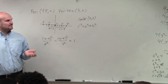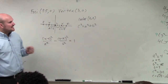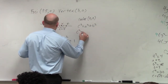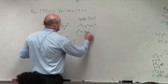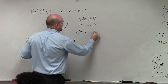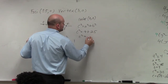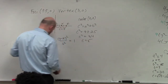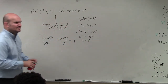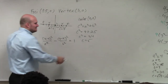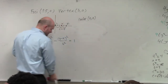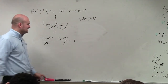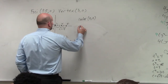Now, the only other piece of information we need — and this is different from an ellipse — is the equation relating A, B, and C, which is like the Pythagorean theorem: C squared equals A squared plus B squared. So C squared equals A squared plus B squared. We need to find B. I know my center is (0, 0).